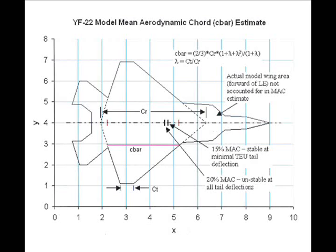Hindsight being 20-20, we could have saved a lot of testing had we started at a barely trailing edge up elevator deflection and just moved CG aft from about 10%.